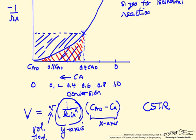Notice it's a much smaller area, and of course as the conversion gets higher, the difference between the plug flow and the CSTR volumes increases even more because we're always running that CSTR at that final conversion.